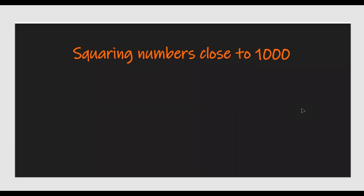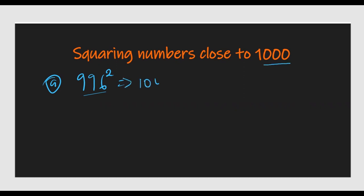Let's see some examples to understand this method. Suppose you want to find 996 squared. The most important thing is to look at the difference — what's the difference between 996 and 1000? So the next step is to say 1000 minus 996.